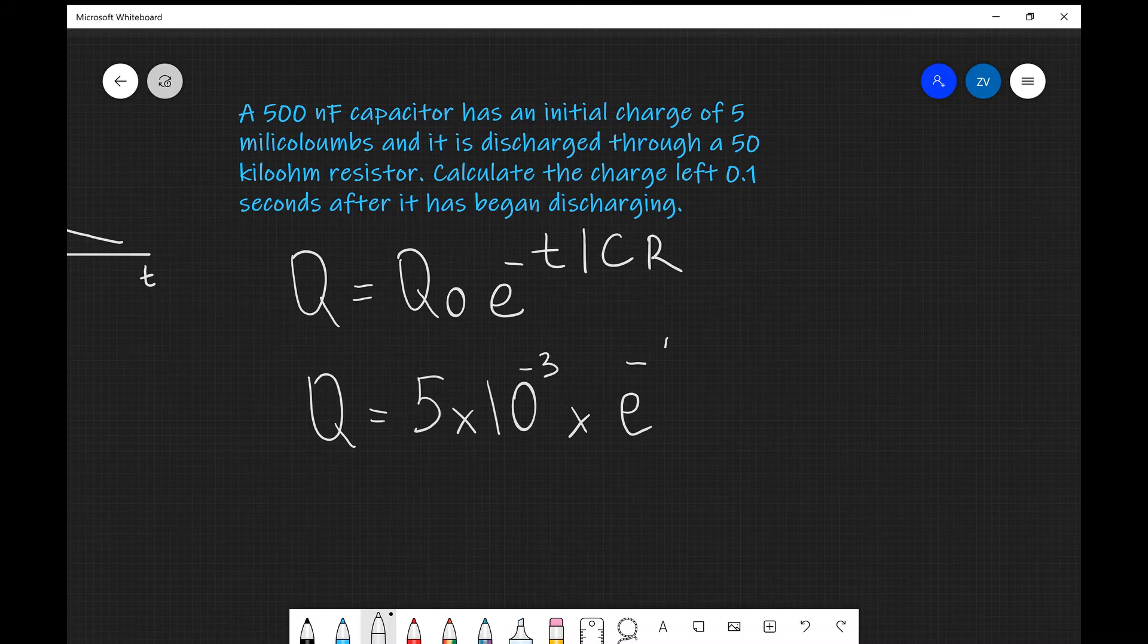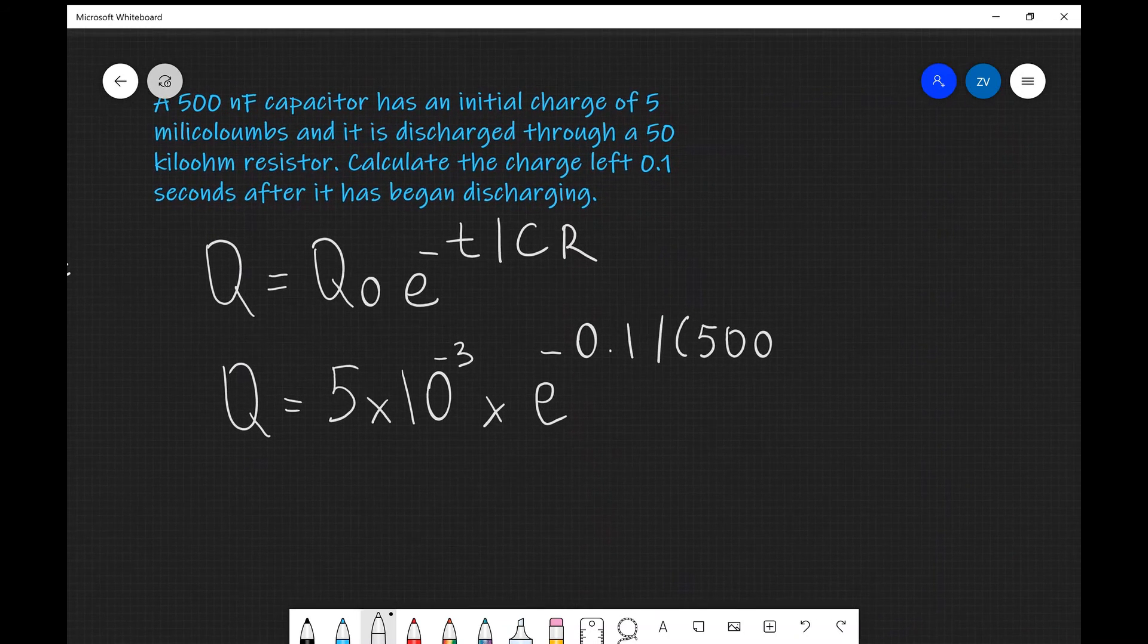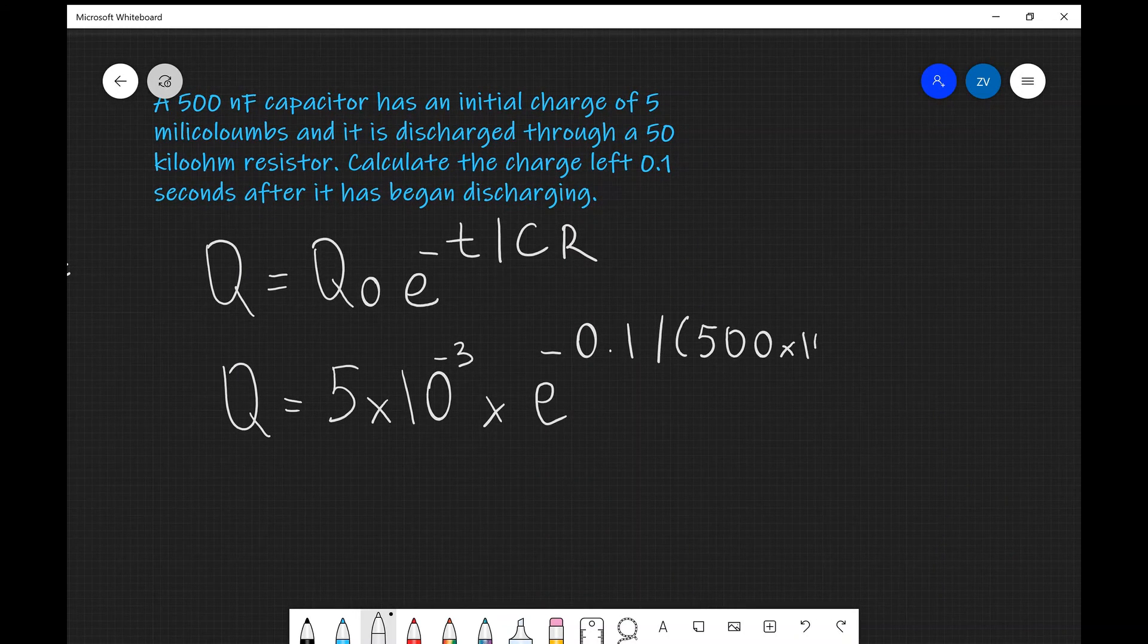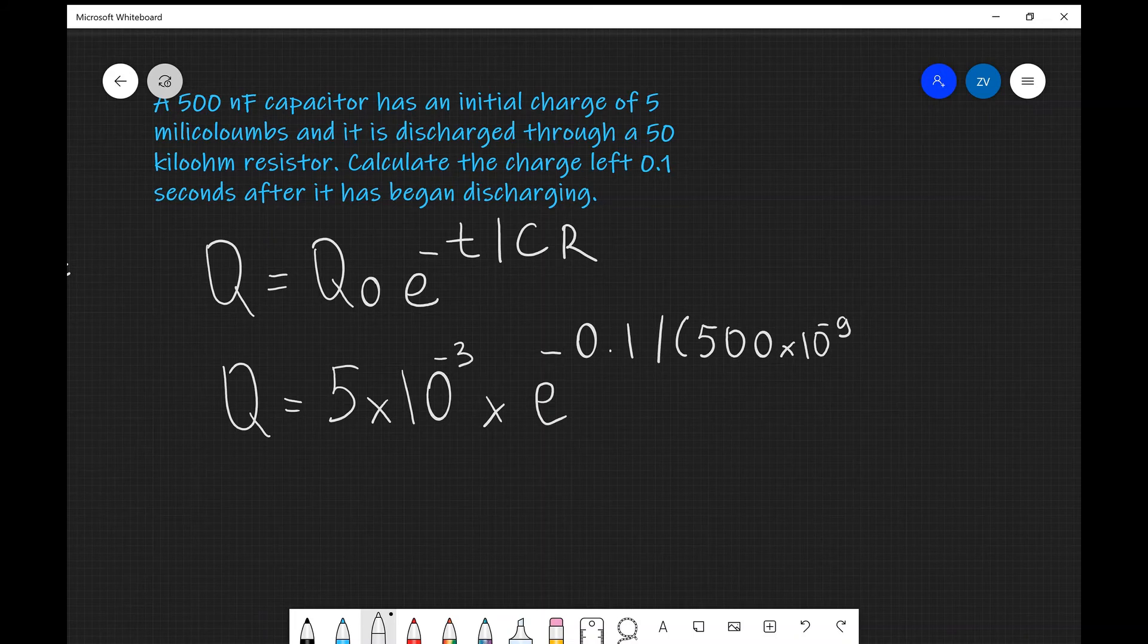Then I'm going to divide this by my capacitance, which is 500 nanofarads, so I'm going to leave some brackets here just to make things super clear: × 10^(-9). And my resistance is 50 kilohms, so that's going to be 50 × 10^3.